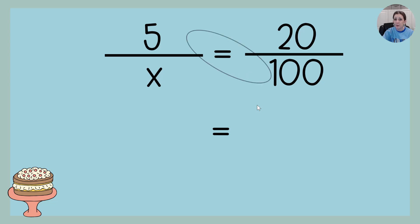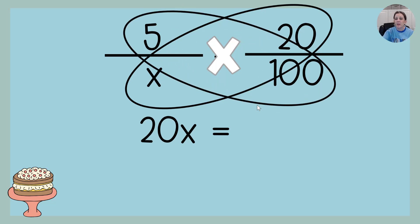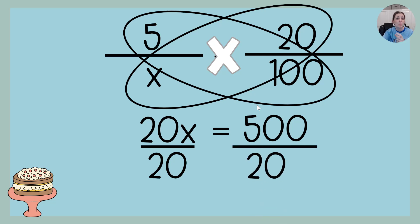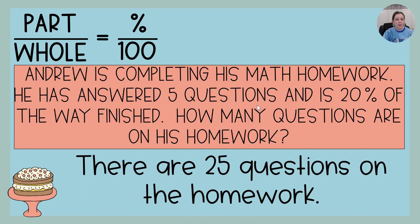Now we're going to do that beautiful cross-multiplication again. 20 times X is 20X, 5 times 100 is 500. 20 times something equals 500. We're going to do the opposite and divide. 20 divided by 20 is 1, which is what we want. 500 divided by 20 will give us X, and in this case, X is 25. Taking that back to our question, how many questions are on the homework? There are 25 questions on the homework.